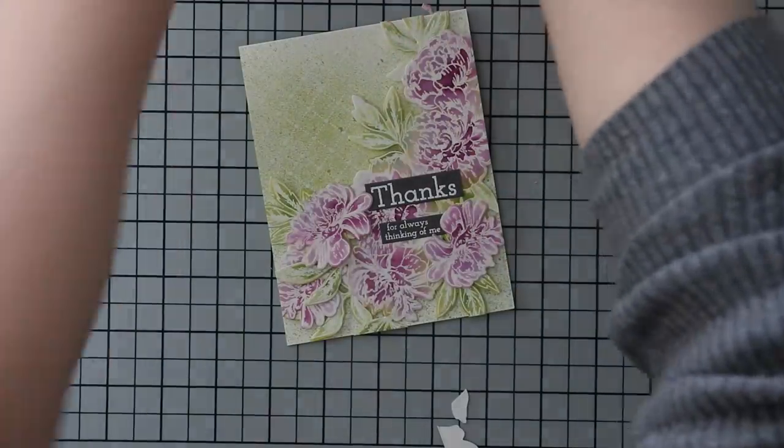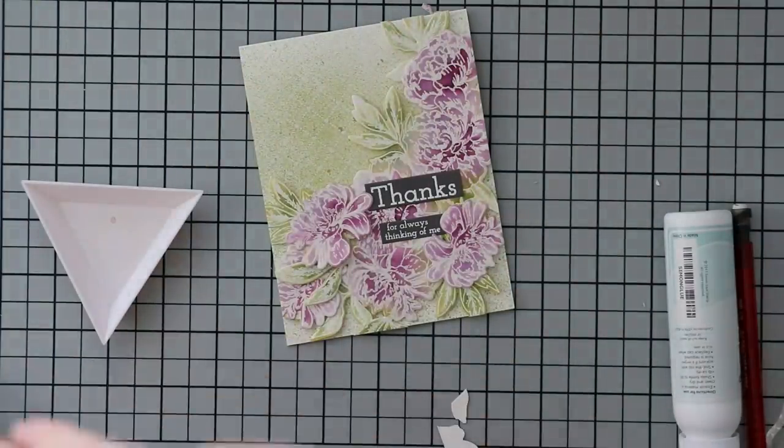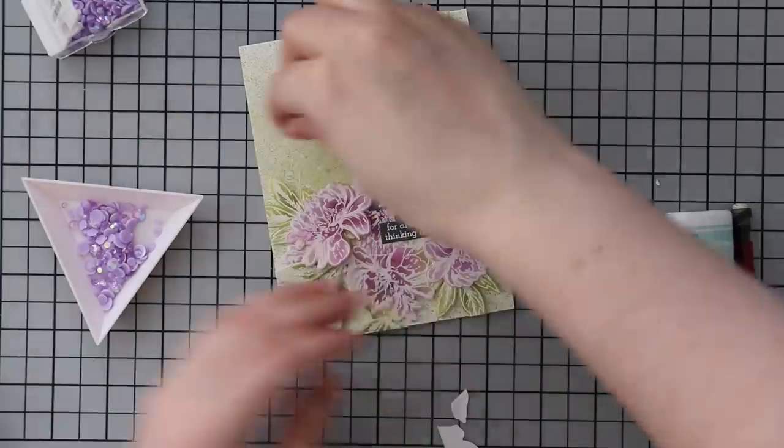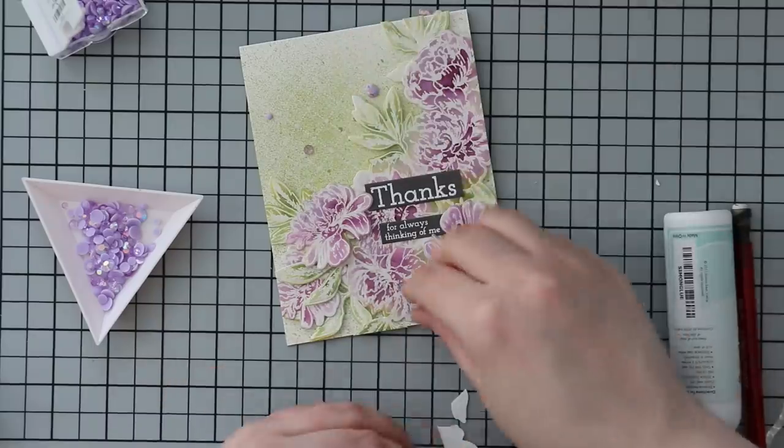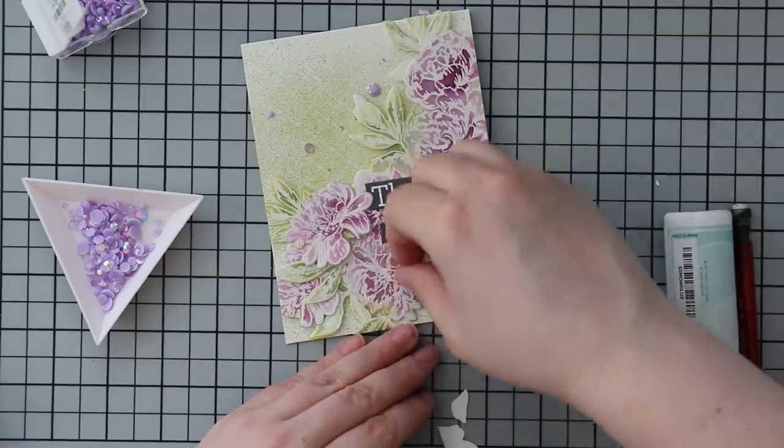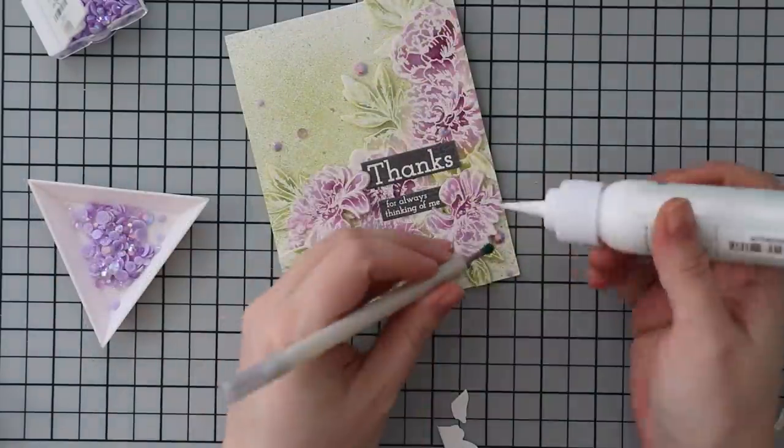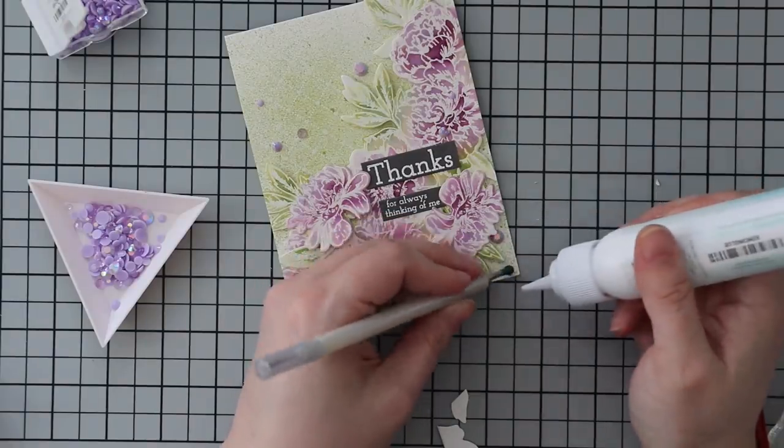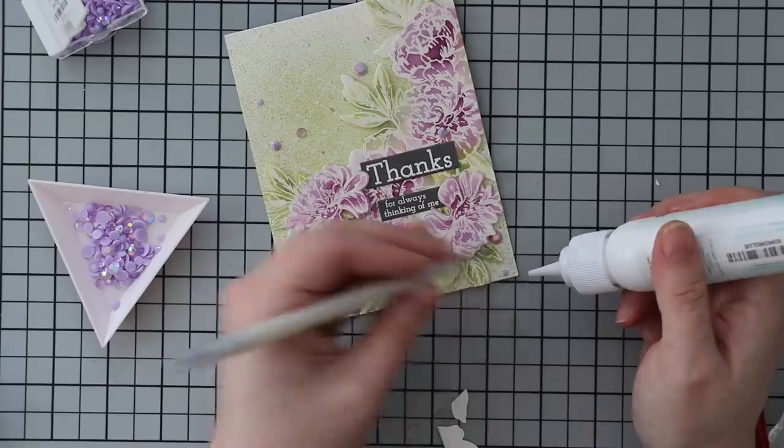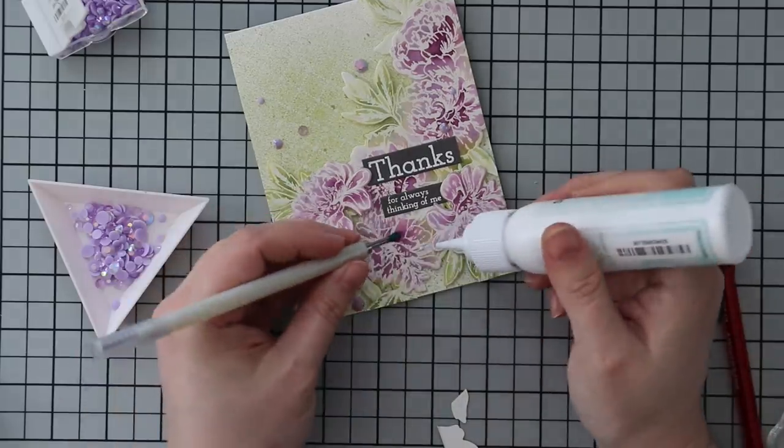Of course, I have to add some bling. I had the Studio Katia June crystals sitting here that I used on my last cards, and the shade of purple was just perfect. I very liberally place these all over my card and glue them into place with craft tacky glue, just picking them up with my jewel picker and pressing them into the adhesive.